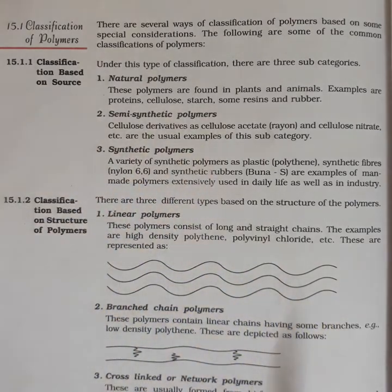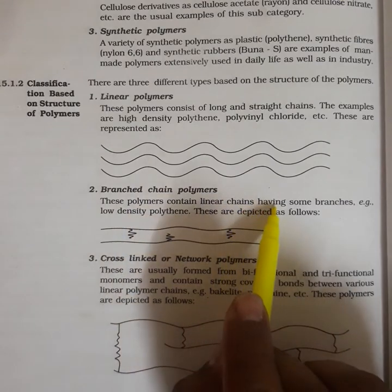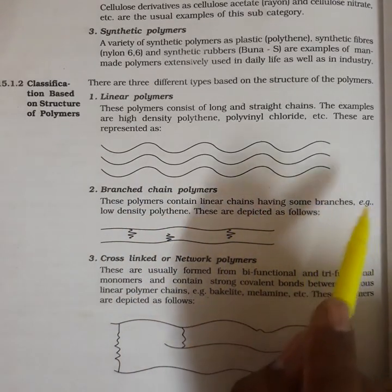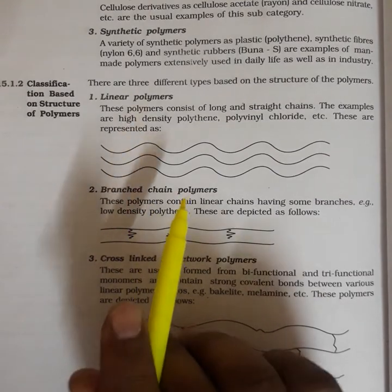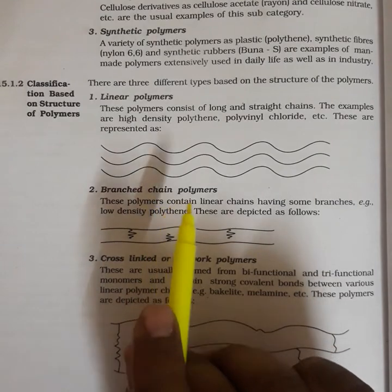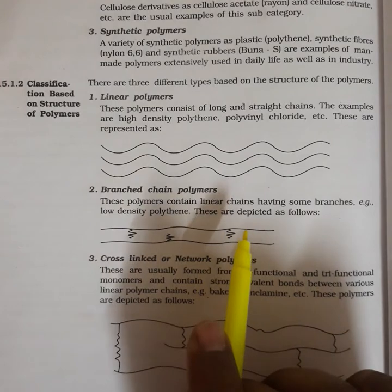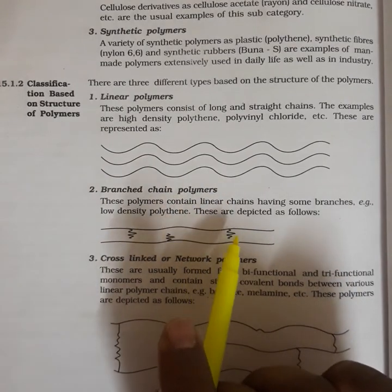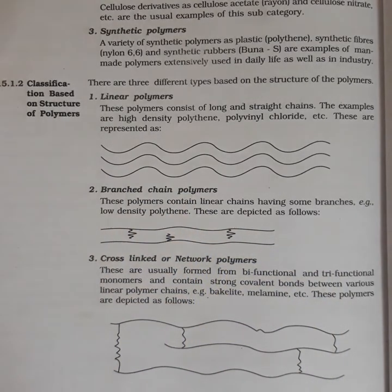Branched polymers contain a linear chain with some branches. Low-density polythene is an example of branched polymers. They have very good tensile strength and are normally recyclable in nature.